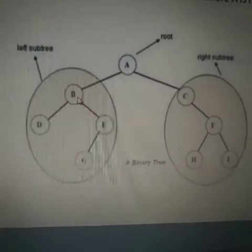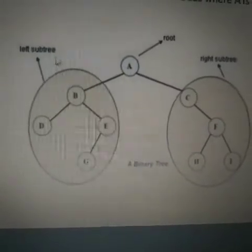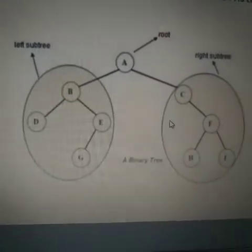The left side we call the left subtree, and the right is the right subtree. A is the root node - the starting node we call the root node.